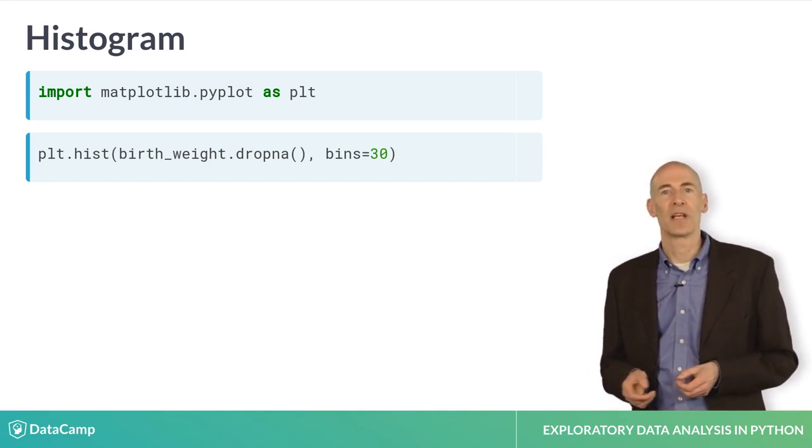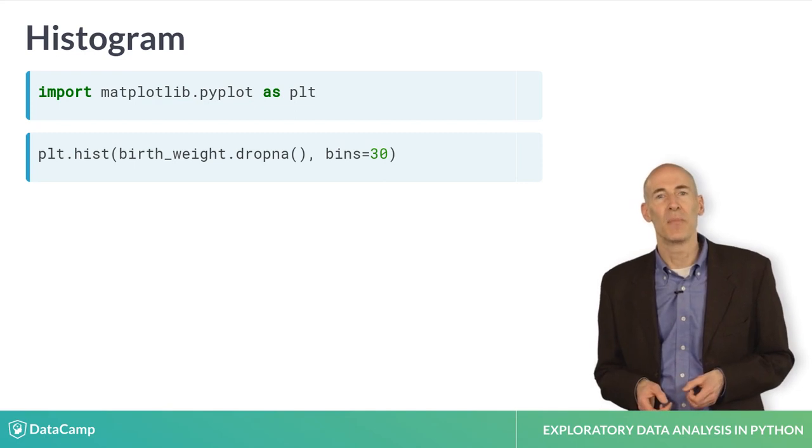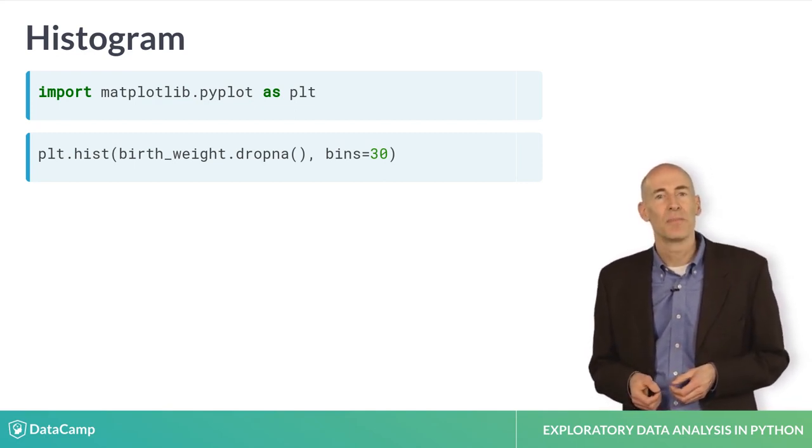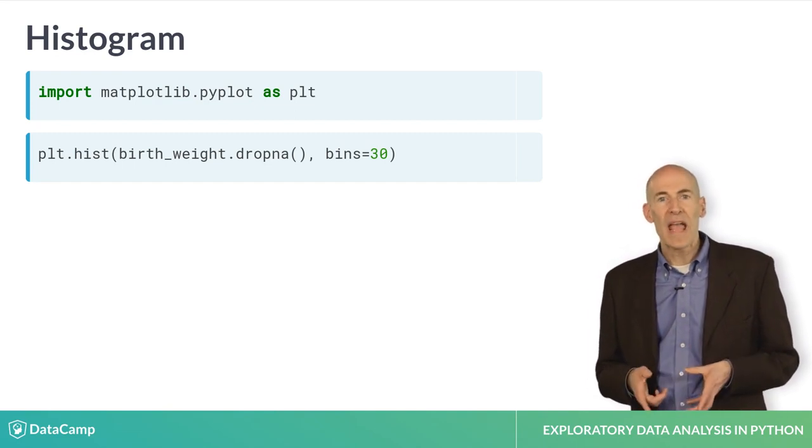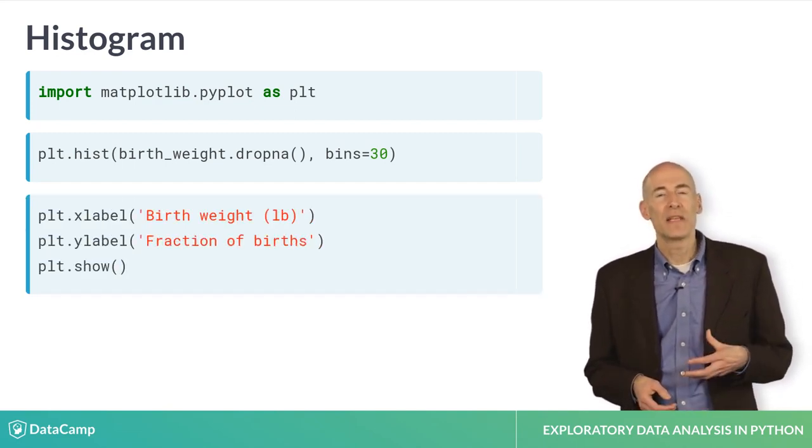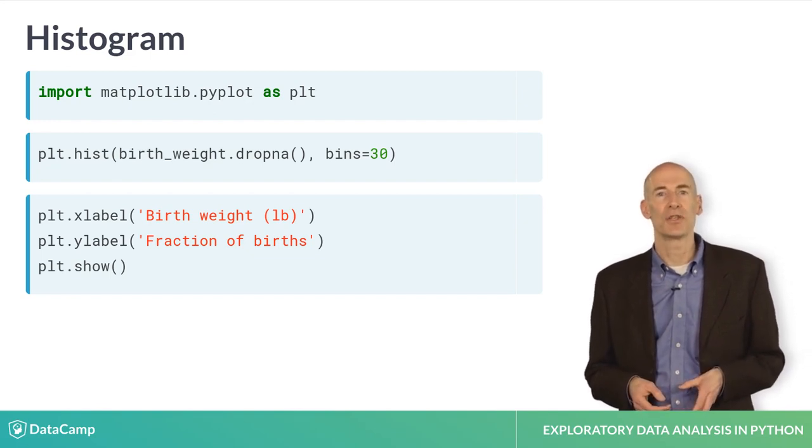Hist takes other arguments that specify the type and appearance of the histogram. You'll have a chance to explore these options in the next exercise. To label the axes, we'll use xlabel and ylabel. And finally, to display the plot, we'll use plt.show.